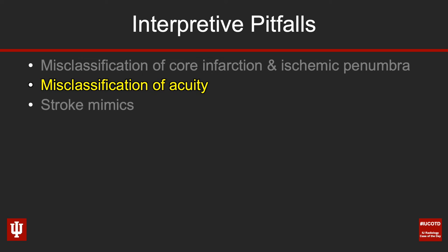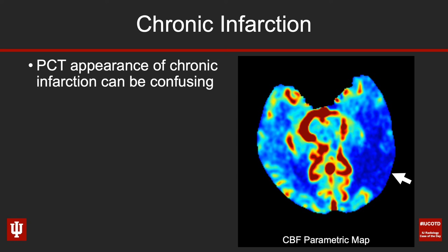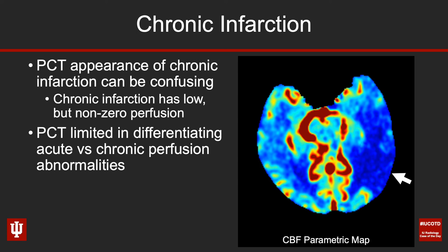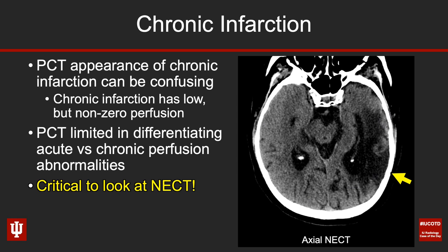The next general topic is misclassification of the acuity of ischemia. Perfusion CT for chronic infarctions can be confusing because chronic infarctions have low perfusion but not zero perfusion — they have some residual perfusion. Perfusion CT is therefore limited in differentiating acute from chronic infarction. In this case, we see a markedly reduced area of cerebral blood flow on the left, but the non-contrast CT shows that's chronic encephalomalacia and gliosis from a remote infarction rather than an acute one. It's critical to look at that non-contrast CT.